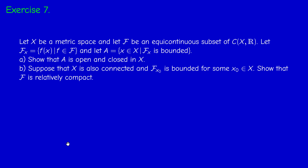Exercise 7. We have a metric space X and a collection F of equicontinuous functions. We consider F_x as usual and the set A of all x such that F_x is bounded. First question: we have to show that A is open and closed. Then we deduce that if X is connected and F_{x₀} is bounded for some x₀, then F is relatively compact — because pointwise boundedness at one point implies pointwise boundedness at every point, given the extra assumptions of connectedness.